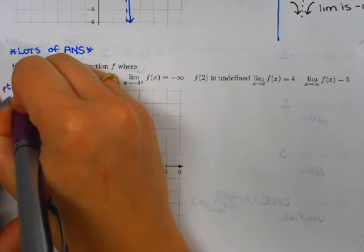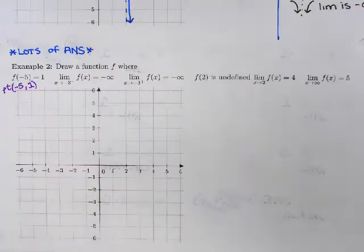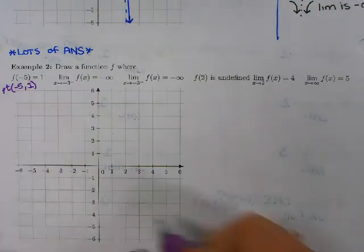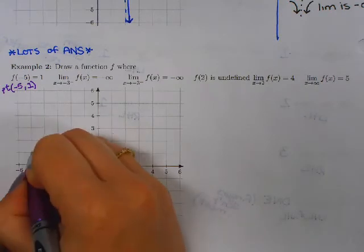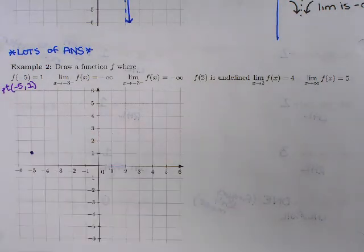That's just a point: negative 5 comma 1. f of x equals y, so negative 5 is my x, 1 is my y. So negative 5, 1. There's my first point.